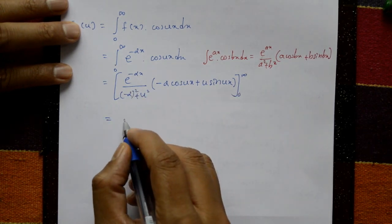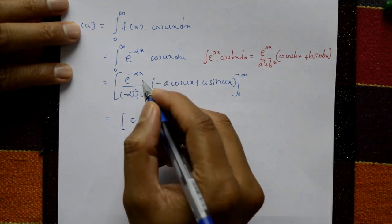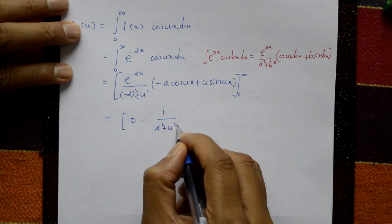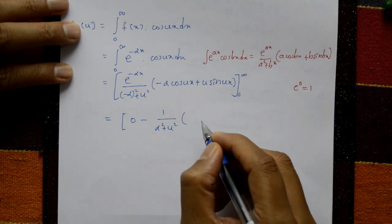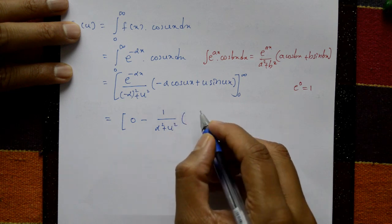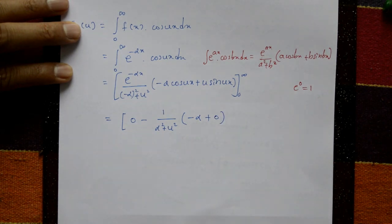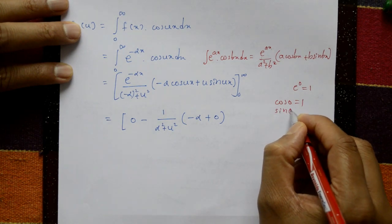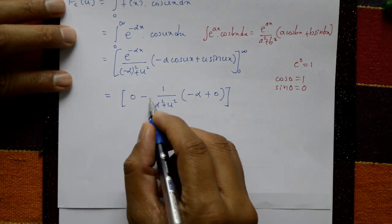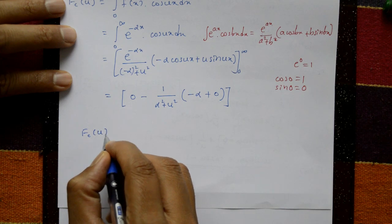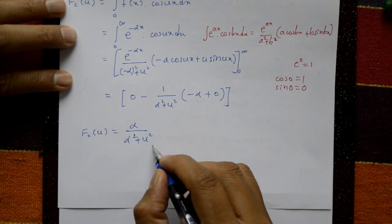Applying the limits: e raised to infinity is 0, so the first term is 0. For the lower limit, x equals 0: e raised to 0 is 1, giving 1 upon (alpha squared plus u squared), into (minus alpha·cos(0) plus u·sin(0)). Since cos(0) equals 1 and sin(0) equals 0, we get minus minus alpha, which gives the Fourier cosine transform: fc(u) equals alpha upon (alpha squared plus u squared).